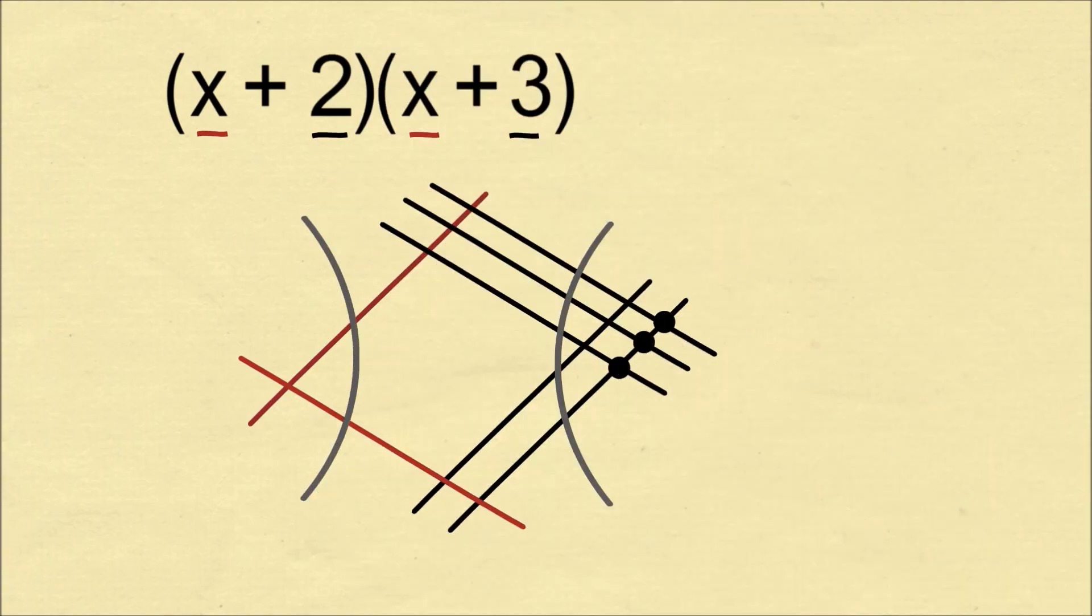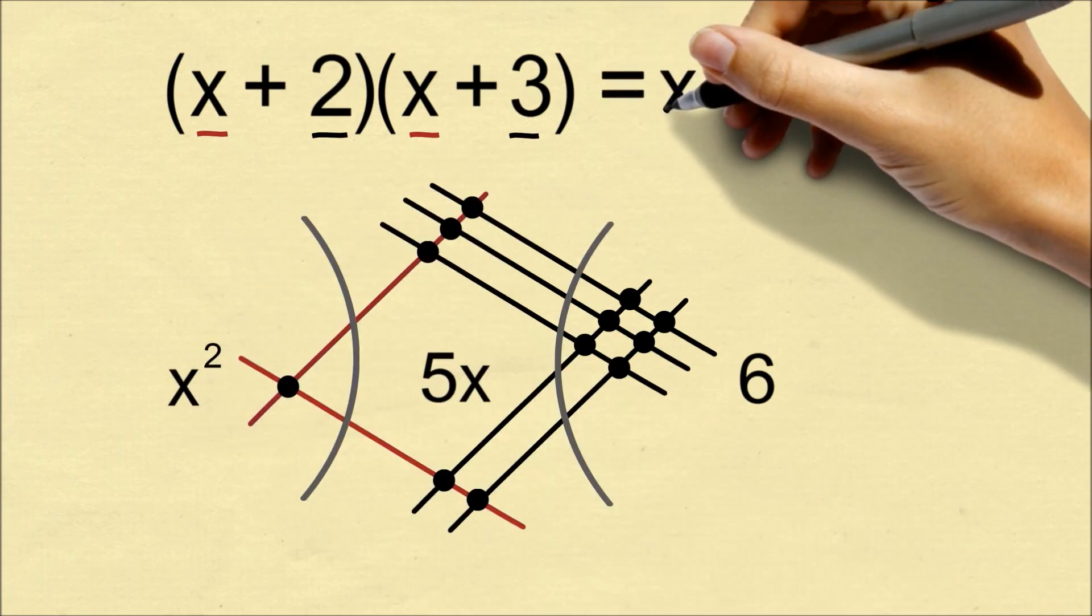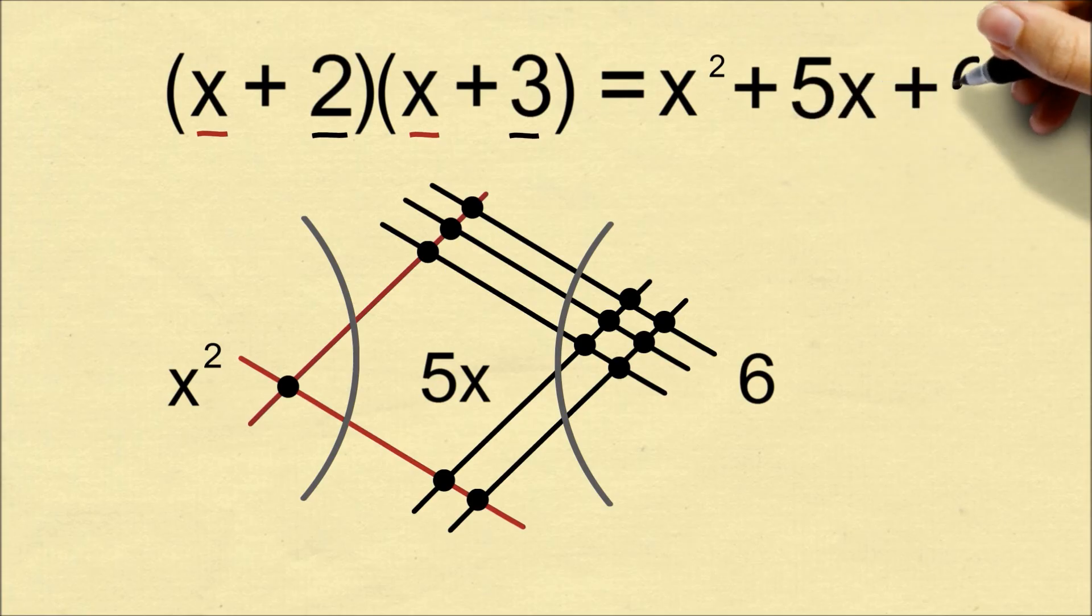On the far right, there are 6 between unit lines. In the middle, there are 5 between a red and a black line, which makes 5x. An intersection of two red lines is an x squared, which gets us our answer of x squared plus 5x plus 6.